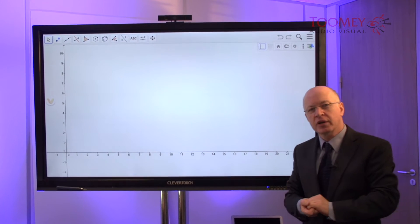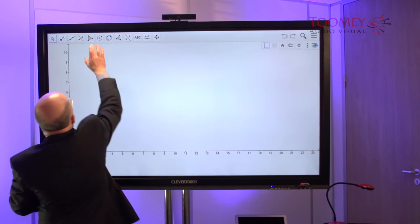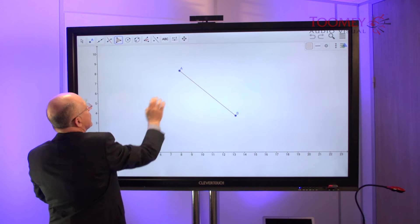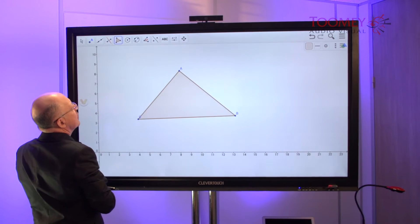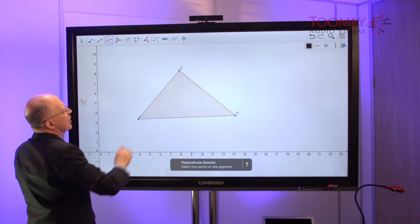I'm just going to run through a quick construction using some of the tools. I'll start with the polygon and then use the perpendicular bisector.